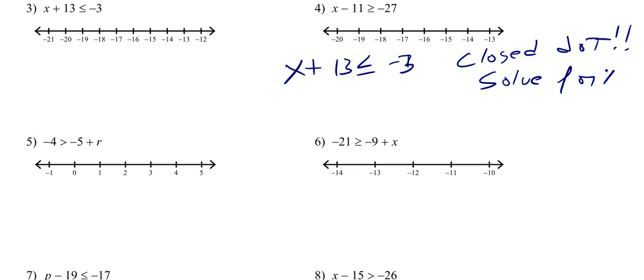You know, isolate the variable. Get it by itself. Ask yourself, what's keeping this x from being by itself? Well, it's a 13. Well, what number added to 13 gives you zero? Well, it's the opposite of 13, which is negative 13. So if we add a negative 13 over here, which is the same thing as subtracting, we've got to subtract negative 13 over here. These become zero. Let's bring down our less than or equal to negative 16, right? So it's going to be a closed dot. And we know that negative 16 could be x or it could be smaller or less than. So we're going to shade in all of this. So x is negative 16. X could be negative 21. It could be any of those values.